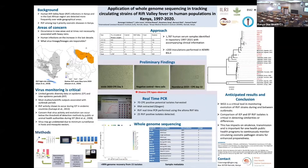To address this gap, we set out to gather genomic data from a pool of over 1,700 archived human samples collected from RVF outbreak events. These samples were collected from four broad regions in Kenya between 1997 and 2020, as highlighted in the table above.